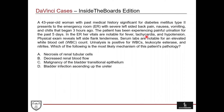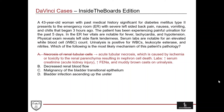Now let's go through the answer choices. Choice A — necrosis of renal tubular cells — describes the pathologic process of acute tubular necrosis, or ATN. This is a result of ischemia or toxic injury to the renal parenchyma, which ultimately results in death of the nephrons. With this, you'll see compromise of kidney function indicated by an increase in serum creatinine — acute kidney injury, in other words — which you tend not to see with pyelonephritis. Classically with ATN, and this is very much worth remembering, you see muddy brown casts on microscopic urinalysis and an increased fractional excretion of sodium.